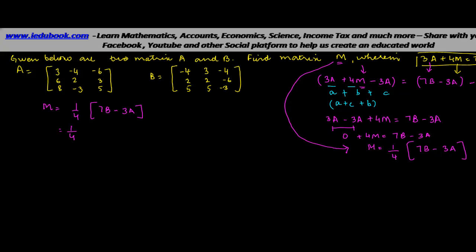1 upon 4. Now 7 into B. What is the value of B? Minus 4, 2, 5, 3, 2, 5, minus 4, minus 6, minus 3, minus 3 into A. A again is 3, 6, 8, minus 4, 2, minus 3, minus 6, 3, 5.